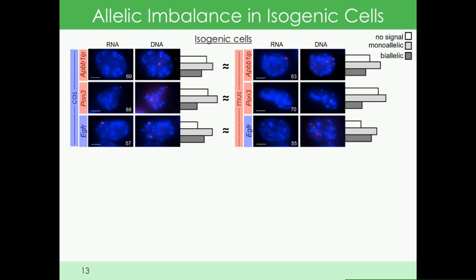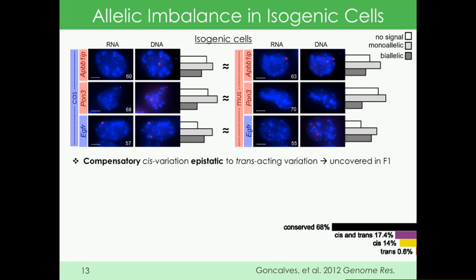We came up with creative models to explain this, but smarter people came up with a better model. John Marioni and others proposed that during divergence of these two lines, there was trans-acting variation that was advantageous in some regulatory targets but had to be compensated for in other regulatory targets. For example, a more active trans-acting factor might lead to many cis-regulatory targets becoming desensitized to reduce their response.